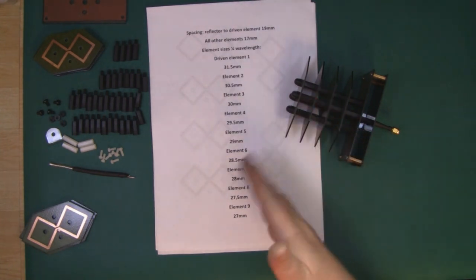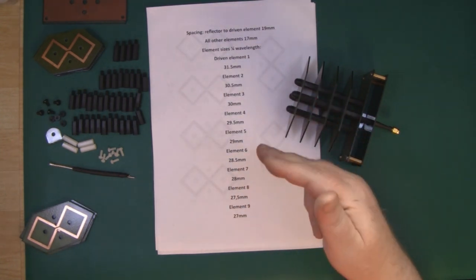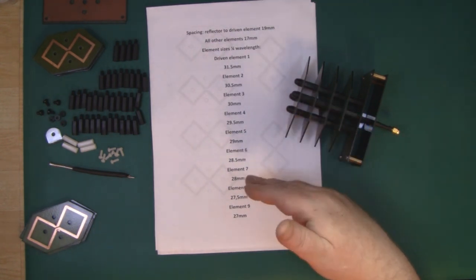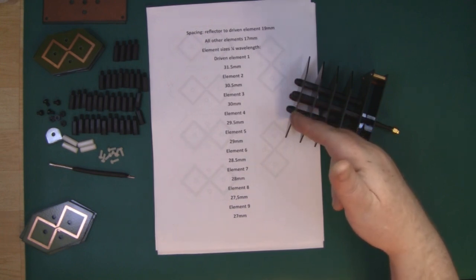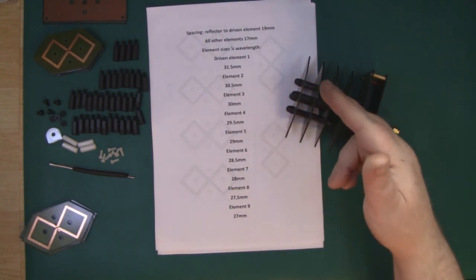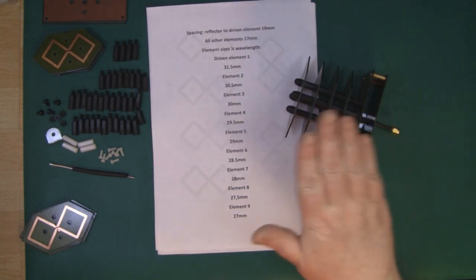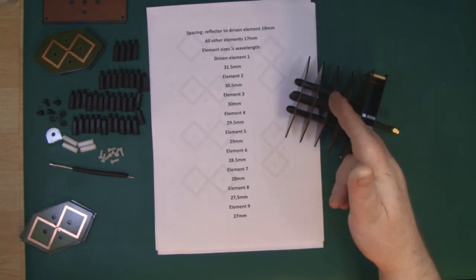When you add parasitic elements, you get to a certain point and they only make very small differences to the gain. Then you get to another point where they make no difference, and then there's a tipping point where adding parasitic elements actually affects the performance. The performance actually drops off even though it's got more parasitic elements.